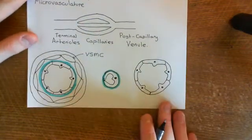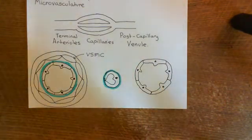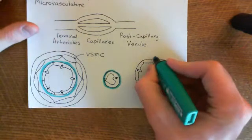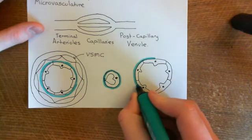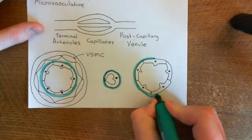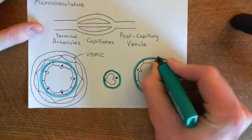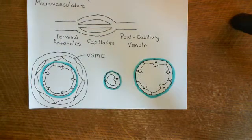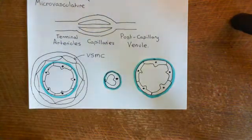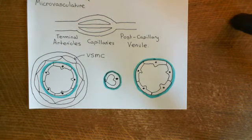Here is our ring of endothelial cells, and again it's around the same size as our terminal arteriole. We've got five endothelial cells making up the circumference, and then they're sitting on a basement membrane which consists mainly of collagen. It's the support for the endothelial cells — you have to think, what's holding these endothelial cells up? Why don't they just flop down or fall into the lumen? Well, it's because they're attached by integrins to the laminins of the basement membrane.